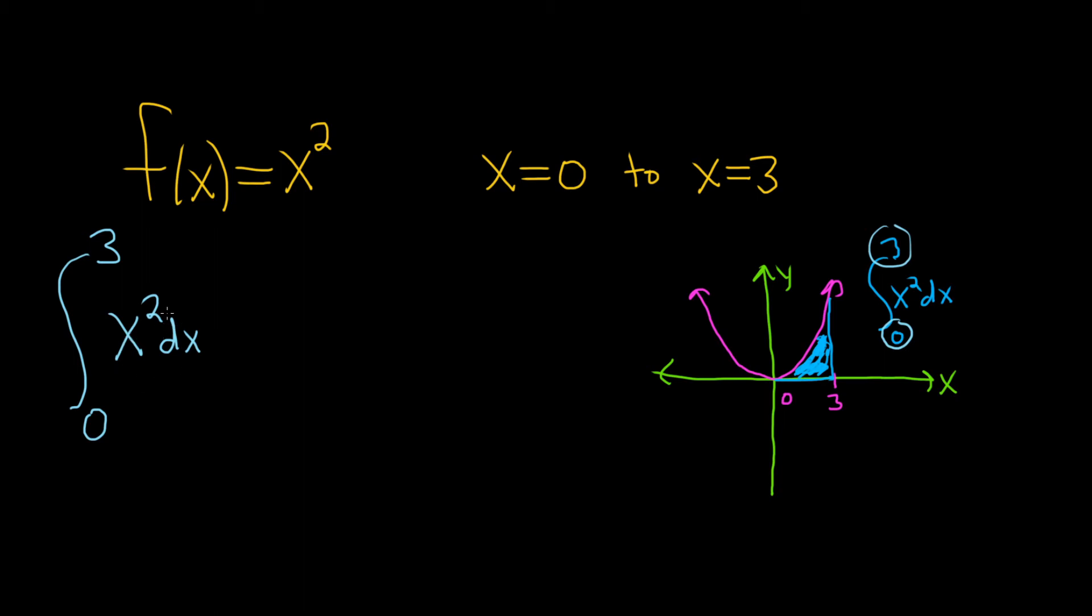So this is a really simple integral. We use something called the power rule to do this. We basically take this number here, we add 1 to it, and then we divide by the result. So 2 plus 1 is 3, and then you just also divide by 3.